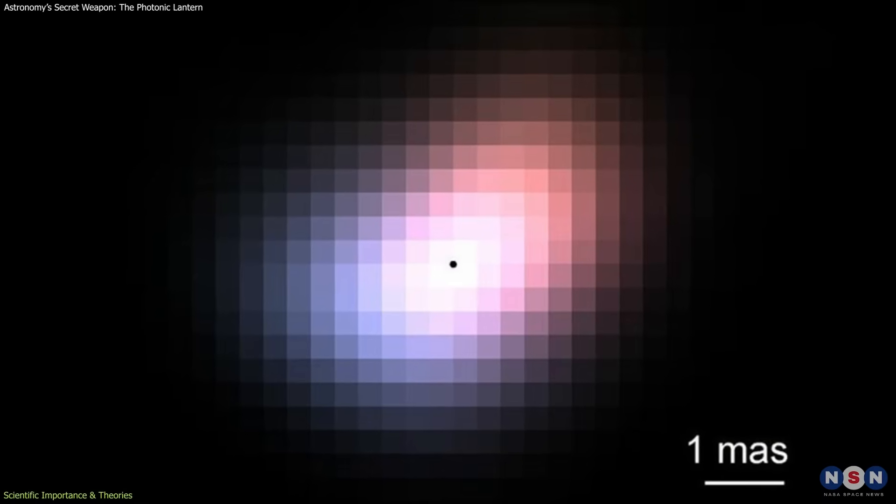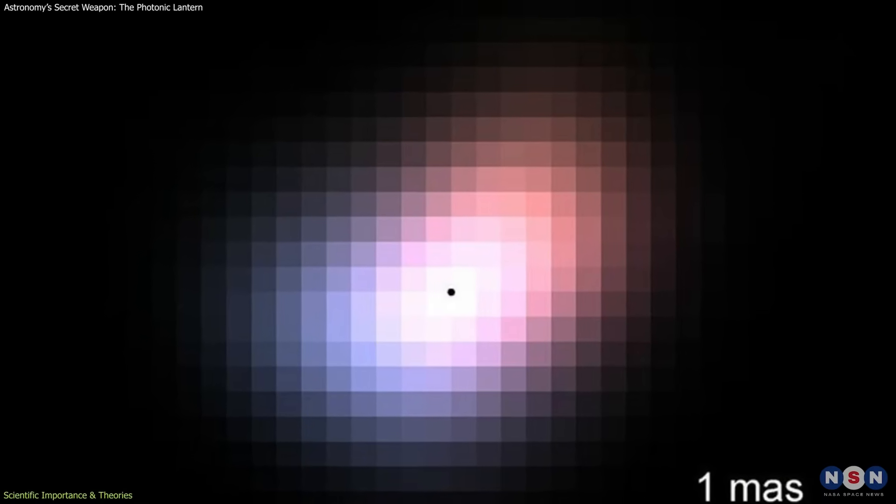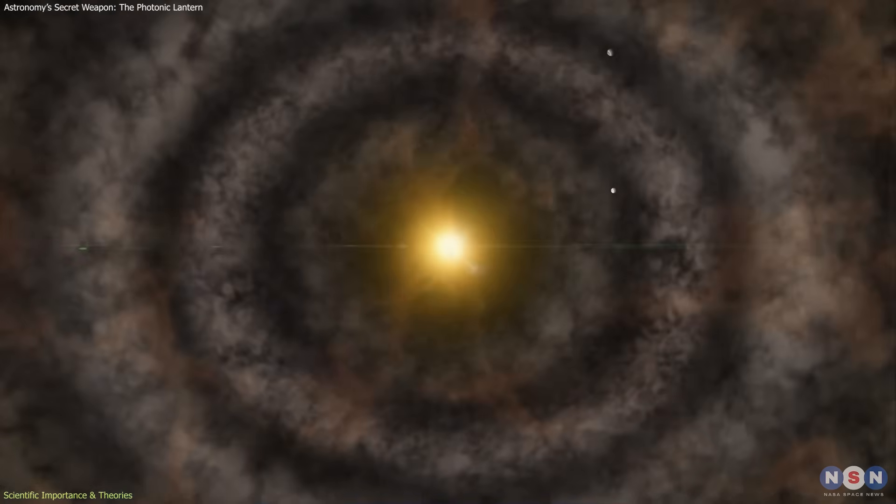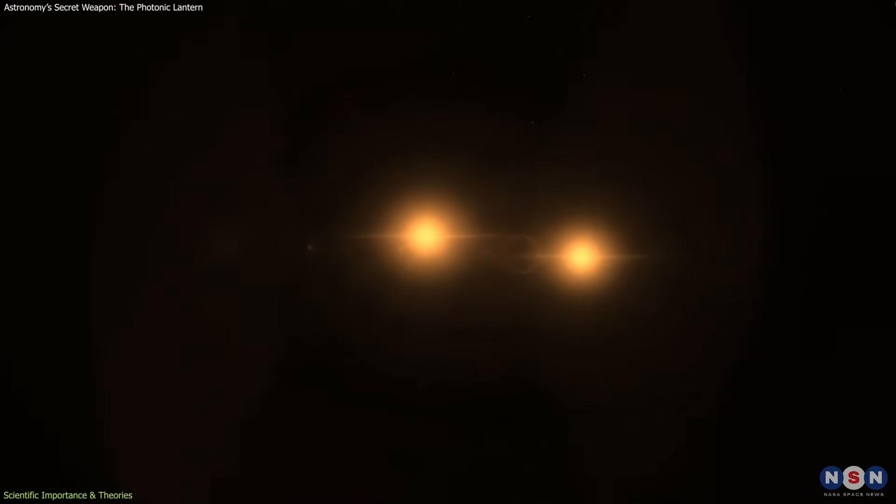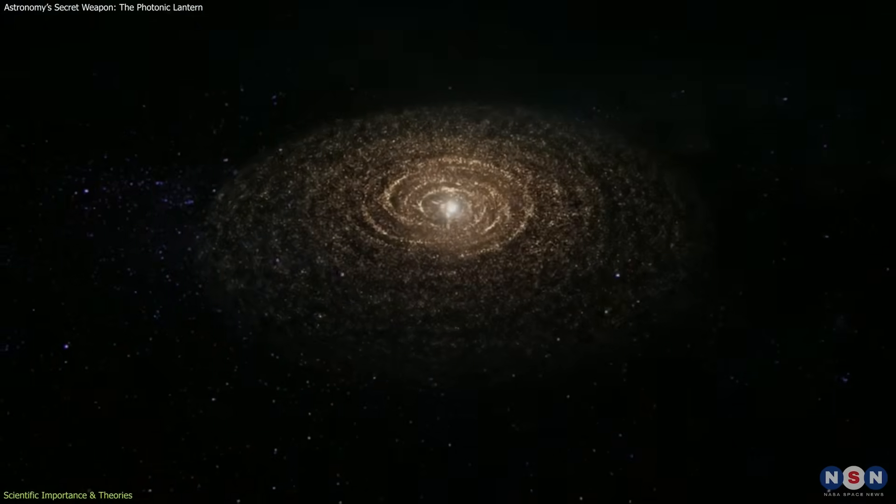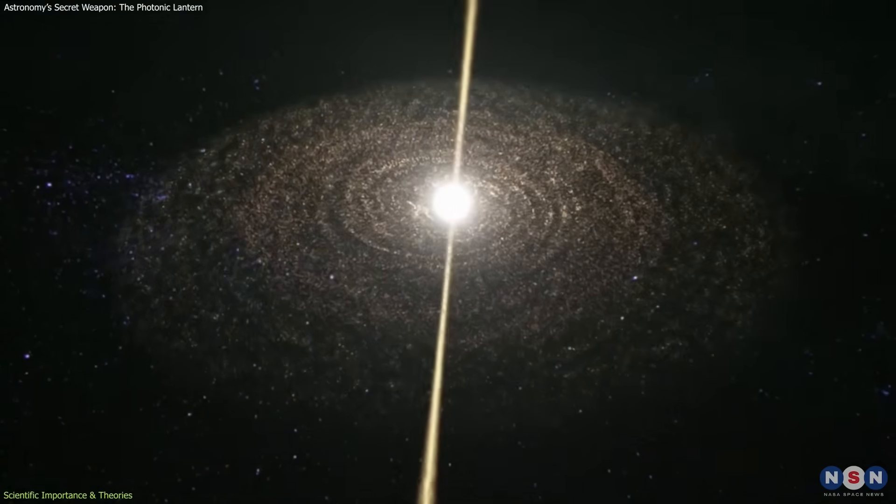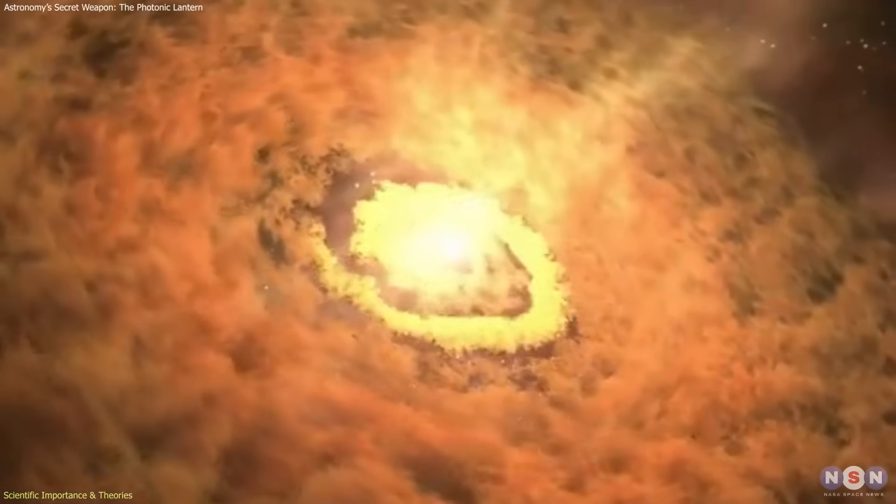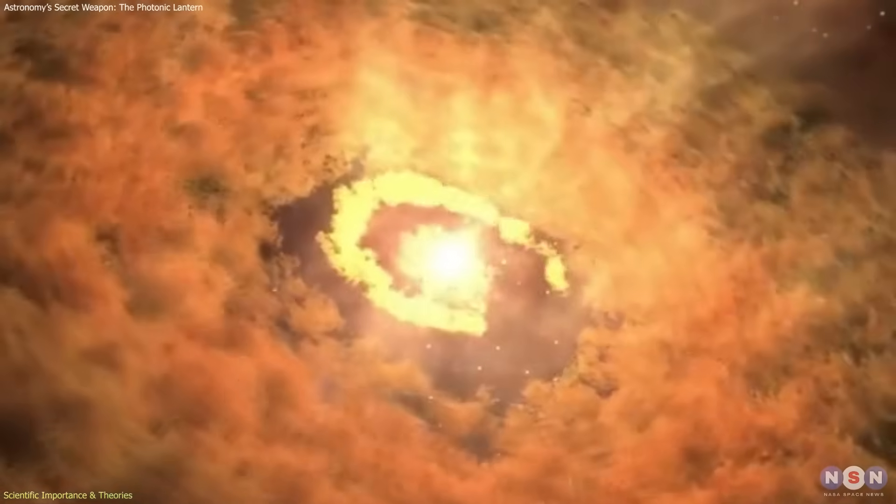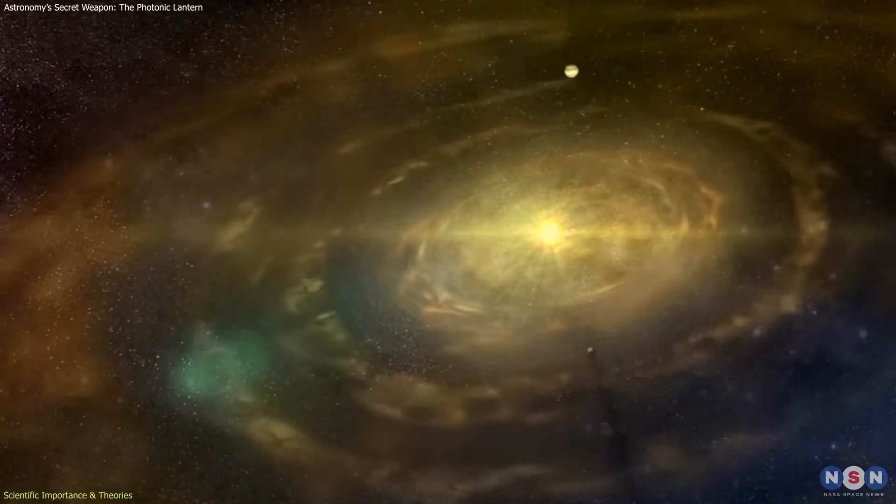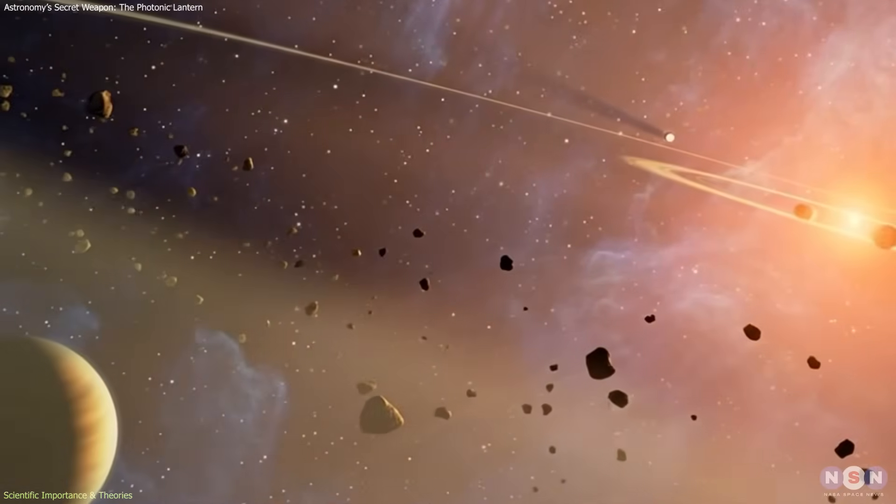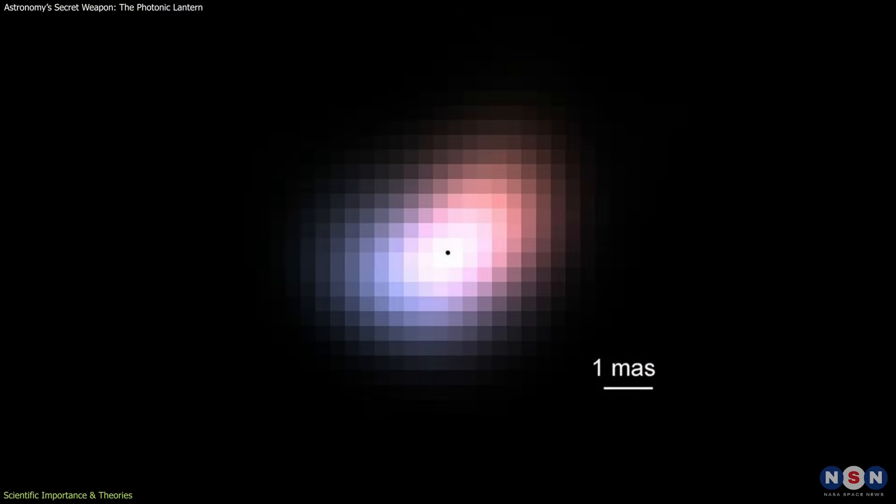Scientifically, the lopsided gas disk around Beta Canis Minoris is more than just a striking image. Such asymmetries can indicate gravitational interactions, perhaps an unseen companion star, or an early stage of planet formation. They may also reveal instabilities in fast-rotating stellar disks, which can reshape how matter is distributed over time. These are subtle effects that would have remained invisible without higher resolution.